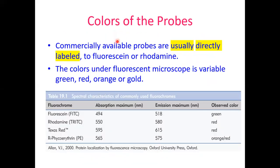Commercial available probes are usually directly labeled — the probes already carry the fluorochrome directly, such as fluorescein (green) or rhodamine (red). Texas Red also appears red, and R-phycoerythrin appears orange or amber. With multiple colors available, we can examine more than one gene sequence simultaneously, and the microscope wavelength filters are adjusted accordingly.